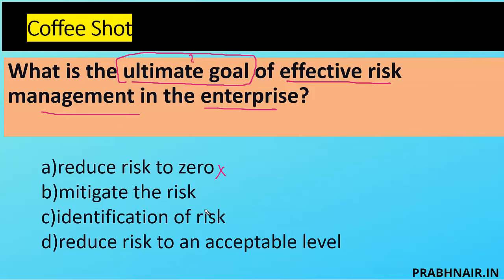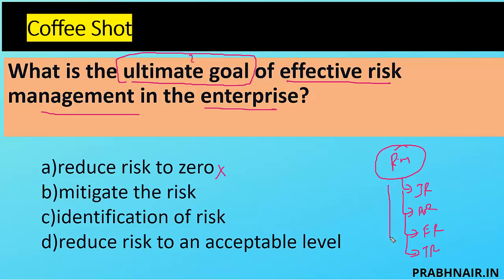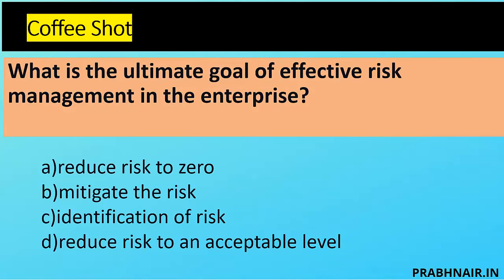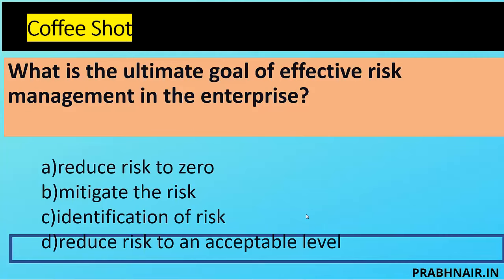Mitigate the risk is one of the treatment options, but we also have others. The risk management steps are: identify, analyze, evaluate, and treat. Treatment has four types: accept, avoid, transfer, and mitigate. Mitigate is not the ultimate goal; identification is the first step, not the goal. By identifying and mitigating, we're reducing risk to an acceptable level. The answer is D.